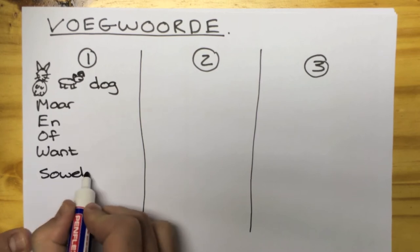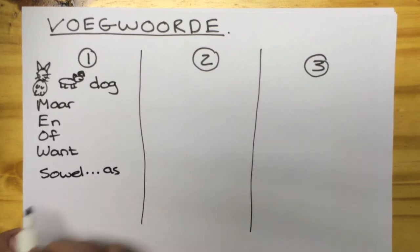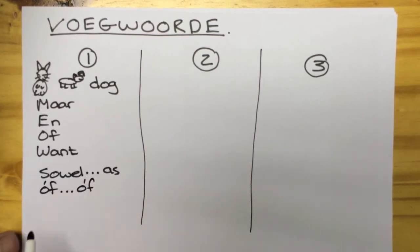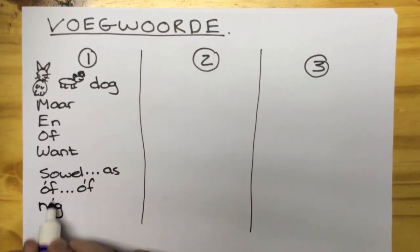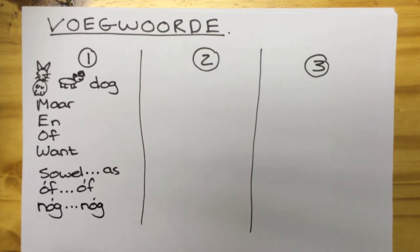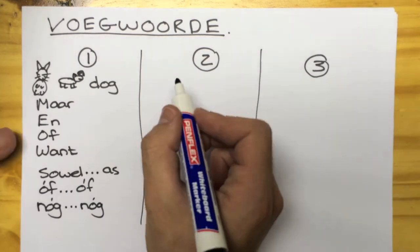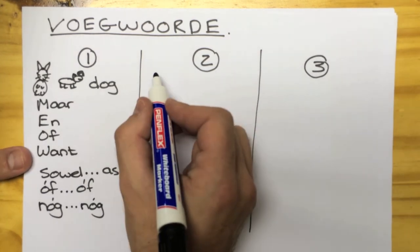And then we also have so wel as, of...of, and neither nor — nog, nog. That is group 1 conjunctions.